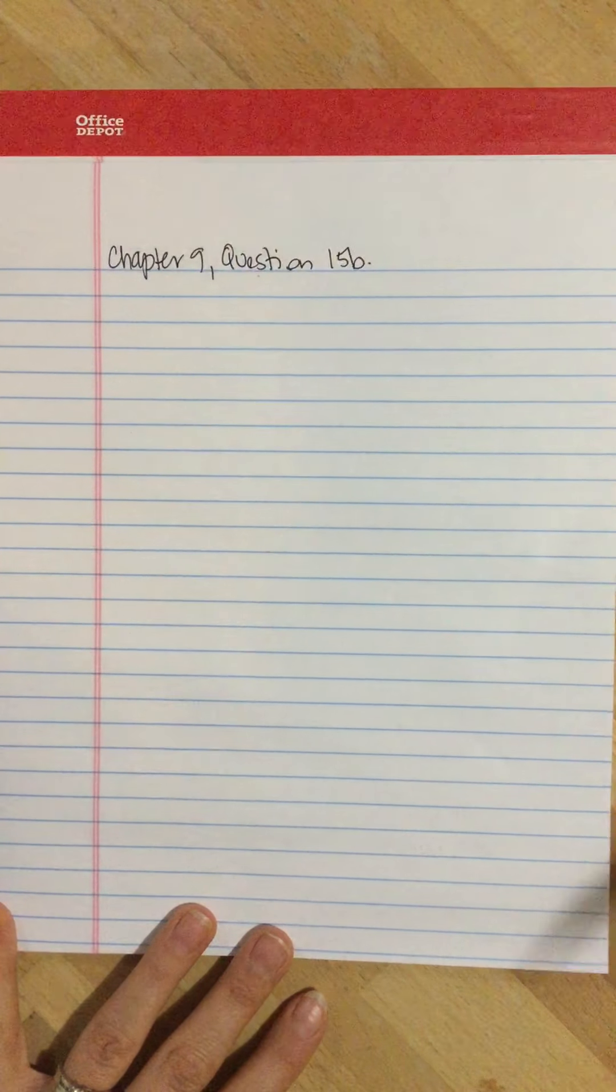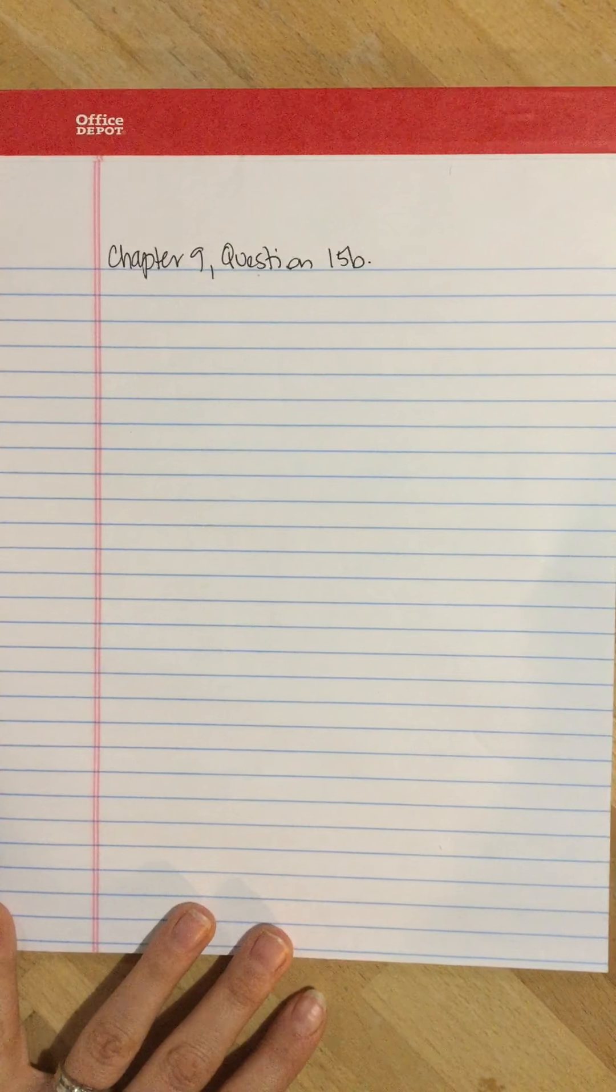Question 15b of Chapter 9 asks or states: make a 90% confidence interval estimate of today's population mean level of anxiety.